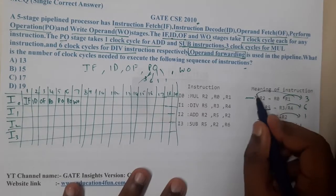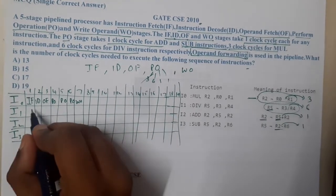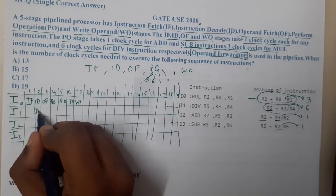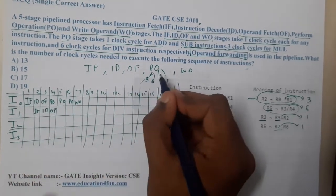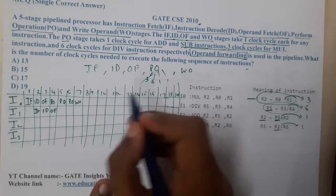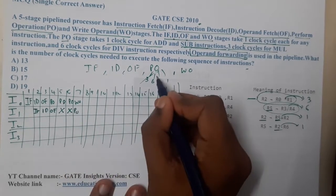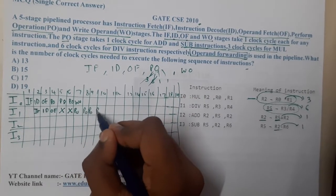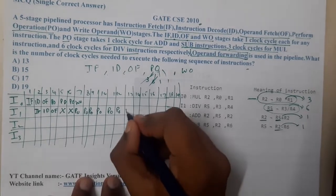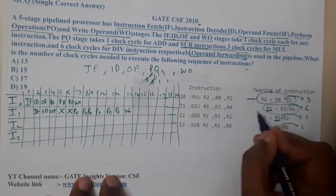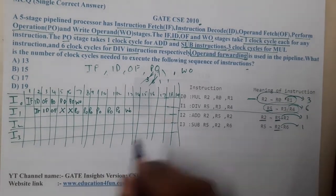Now let's check if there's a dependency between I0 and I1. There is no dependency, so I1 also runs smoothly. I1 goes through IF, ID, OF. When it reaches PO, I0 is still running, so I1 must wait. Once I0's PO completes, I1 can execute its six PO clocks (division), then WO. This completes 13 cycles total.